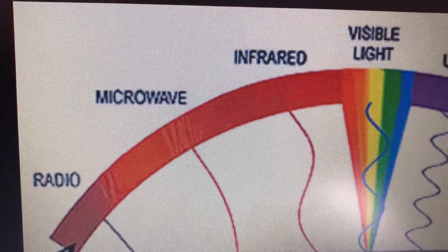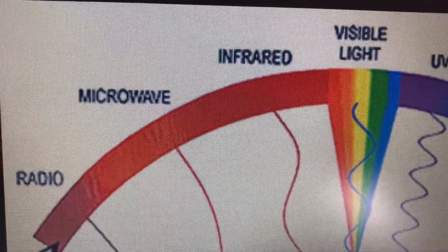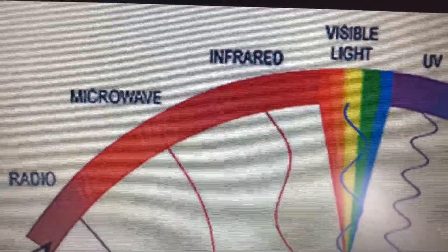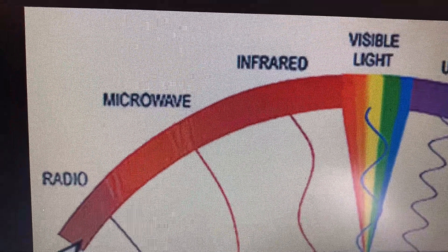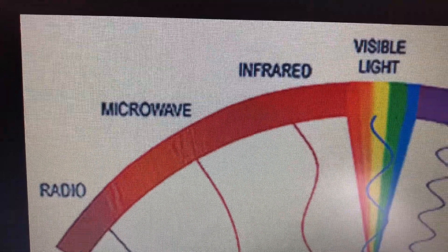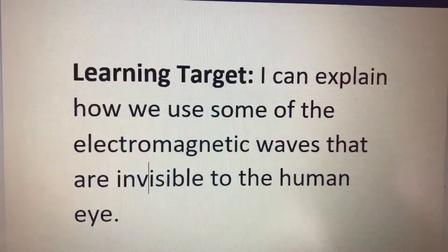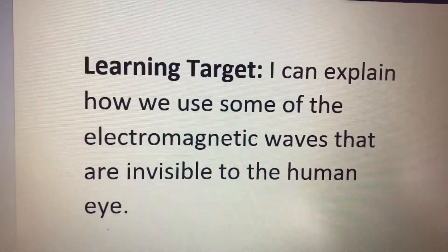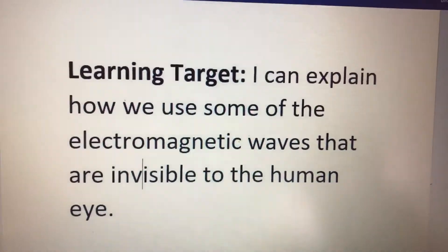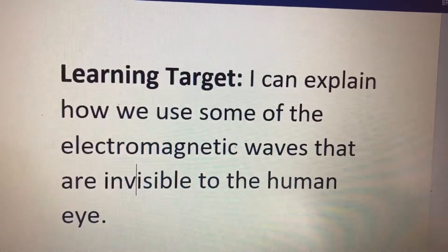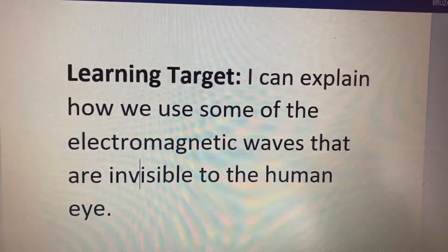We want to explore the ones that have a longer wavelength than red. Remember, red has the longest wavelength of visible light. So we want to explore today those lights that happen after the red — the infrared, the microwave, and the radio. Our learning target today is: I can explain how we use some of the electromagnetic waves that are invisible to the human eye. By the end of this lesson, you will be able to explain how humans use the electromagnetic waves that are invisible to the human eye — those waves with a longer wavelength than the red light wave.